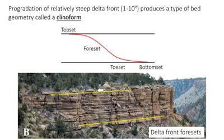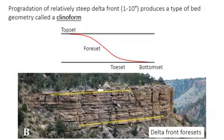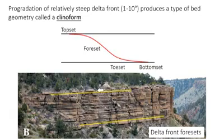It has flatter top-set beds where they bend and become parallel with the overlying flat layers. A steeper fore-set — not unlike what you saw in cross-bedding, but at a much larger scale. Shallowing out toe-set beds and a fairly flat bottom-set that merges parallel with the underlying layers. In the diagram here, the fore-set beds' dip is really highly exaggerated.